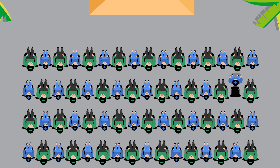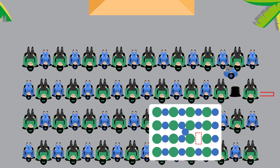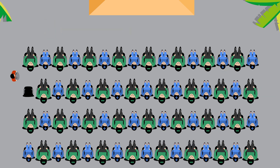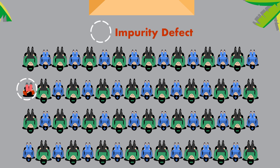If a student leaves his seat and goes to an interstitial space, then it is known as interstitial defect. And if someone else occupies the vacant seat of a student or the parent, it is said to be impurity defect.